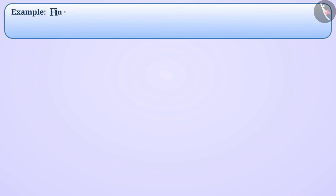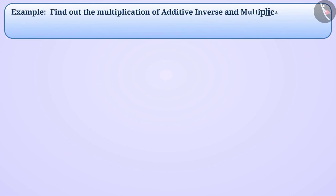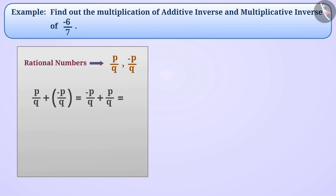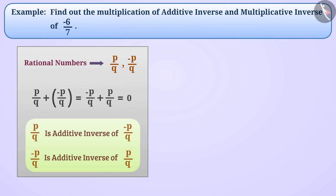Find out the multiplication of additive inverse and multiplicative inverse of minus 6 by 7. If addition of any two rational numbers is 0, then both rational numbers are additive inverse of each other.